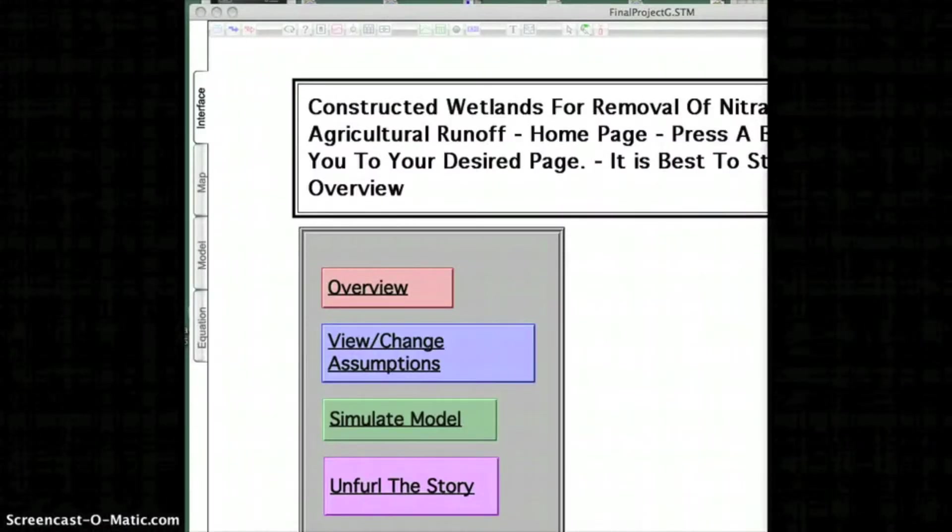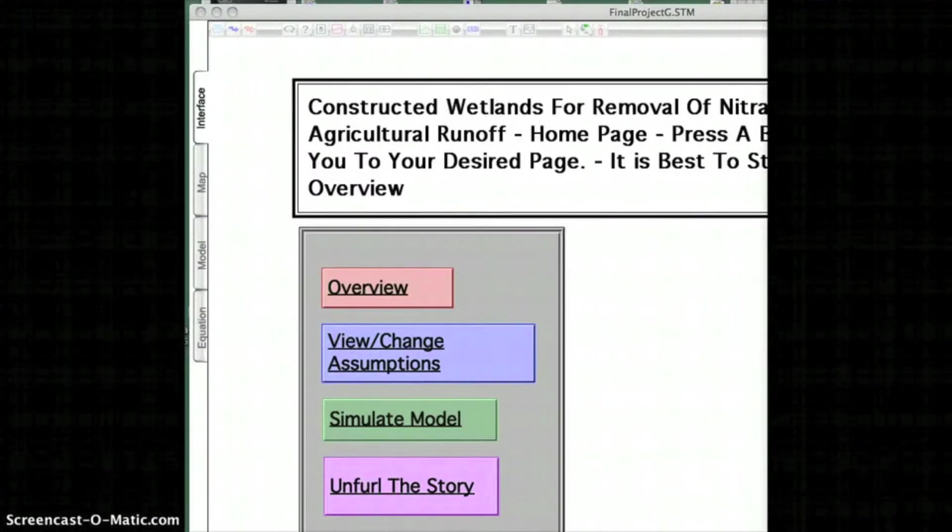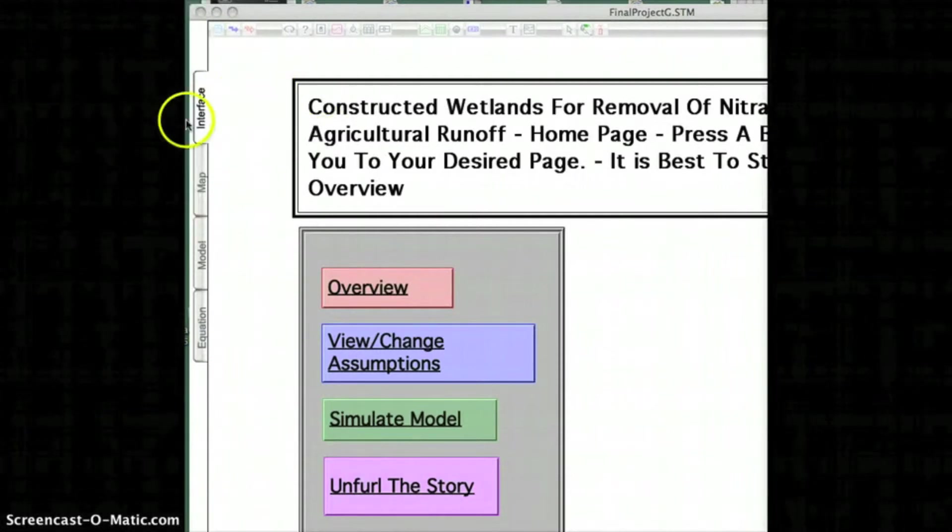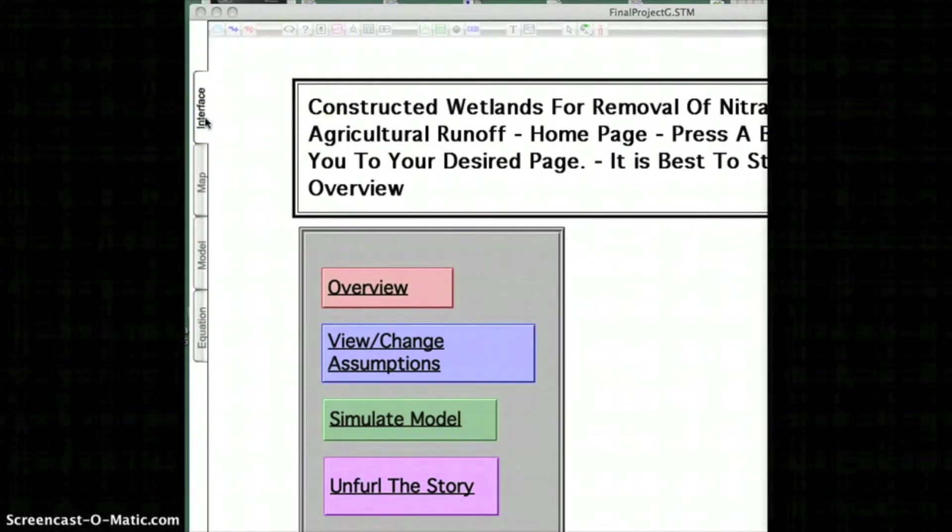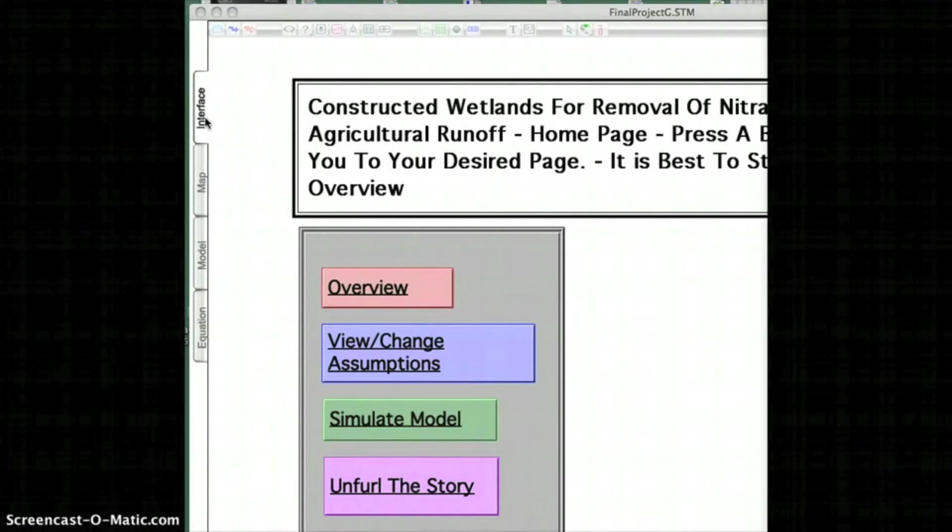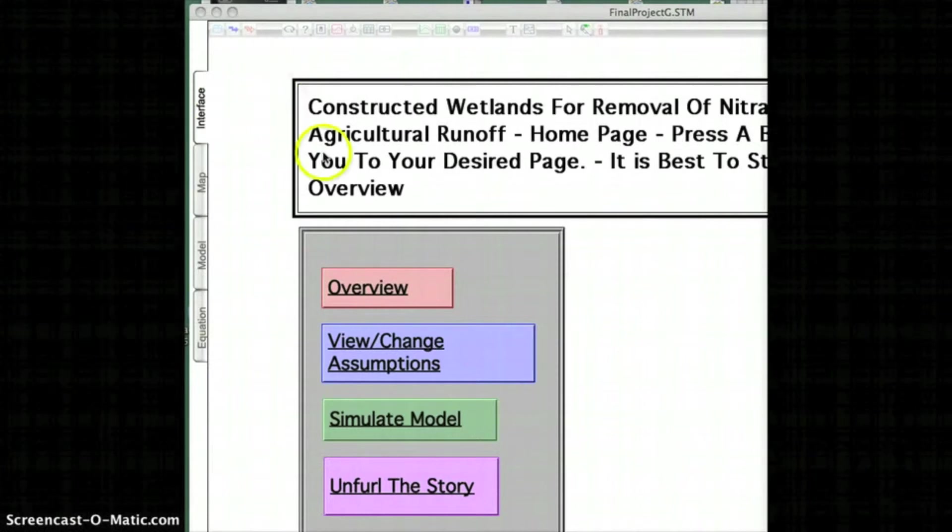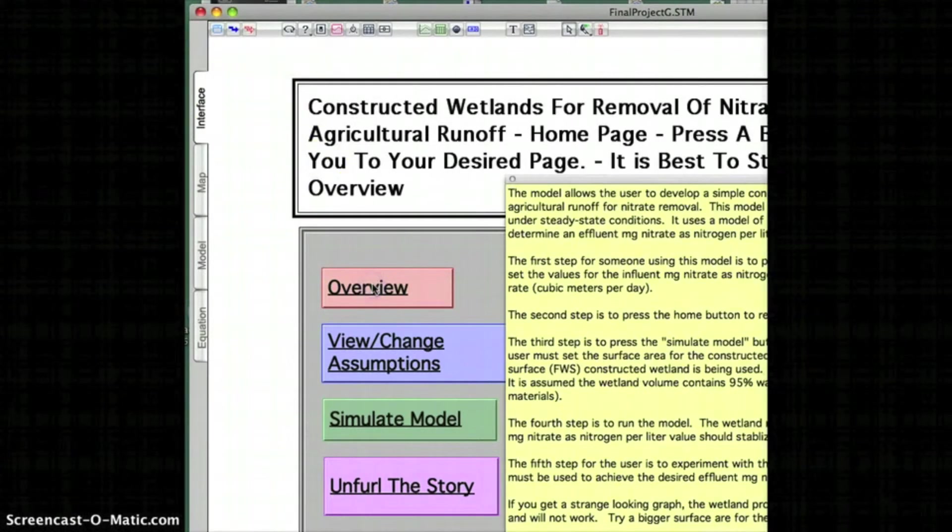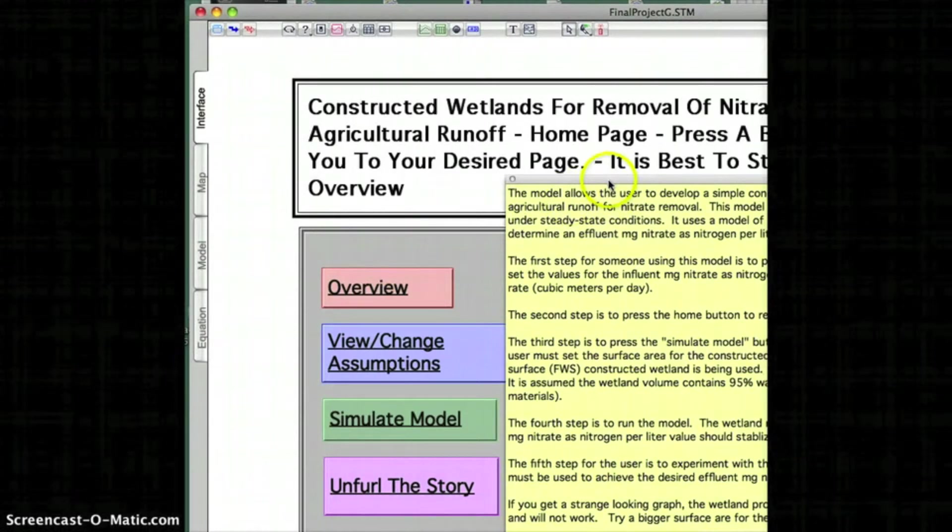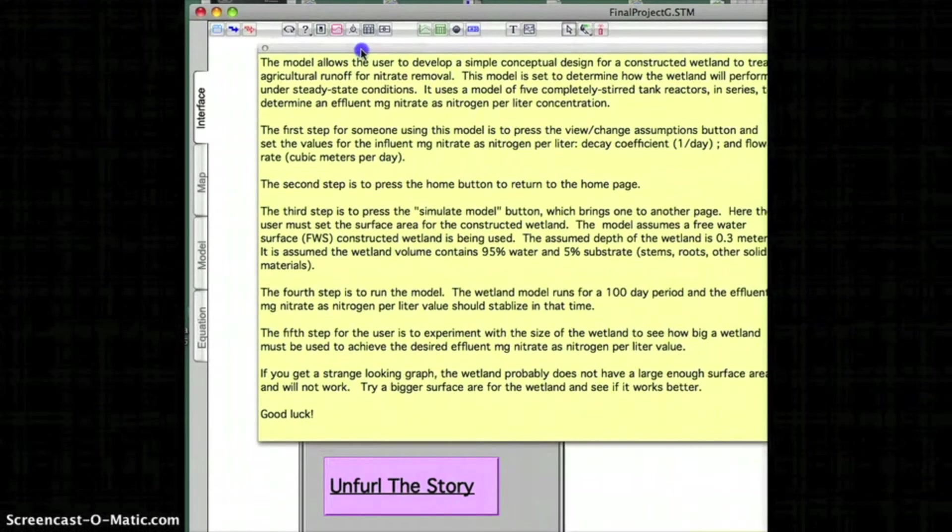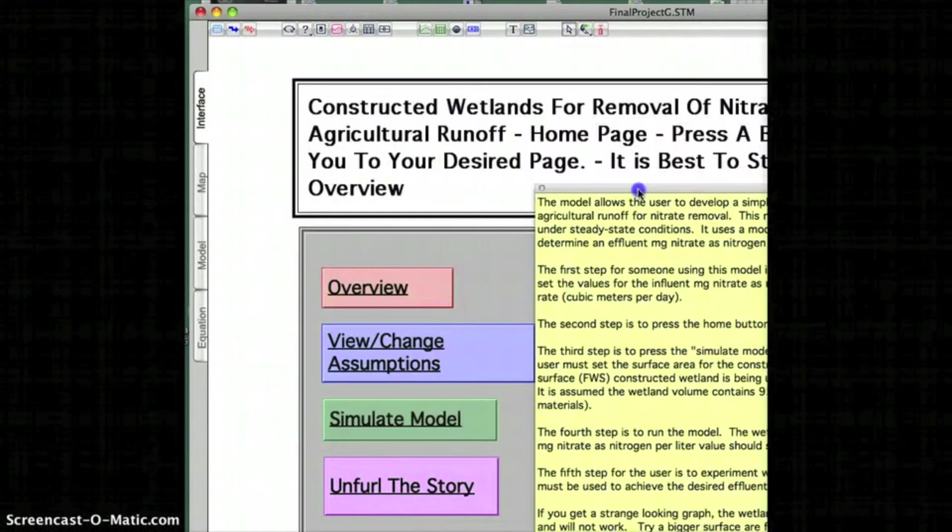Finally, I'd like to show you the layer of Stella that allows you to make your model user-friendly. It's called the interface layer. It's just a different layer of material and it allows people to look at your model and work with it who aren't familiar with exactly how it's made. So, for example, there's an overview here, and the overview allows you to write some text about what your model is and how it works.